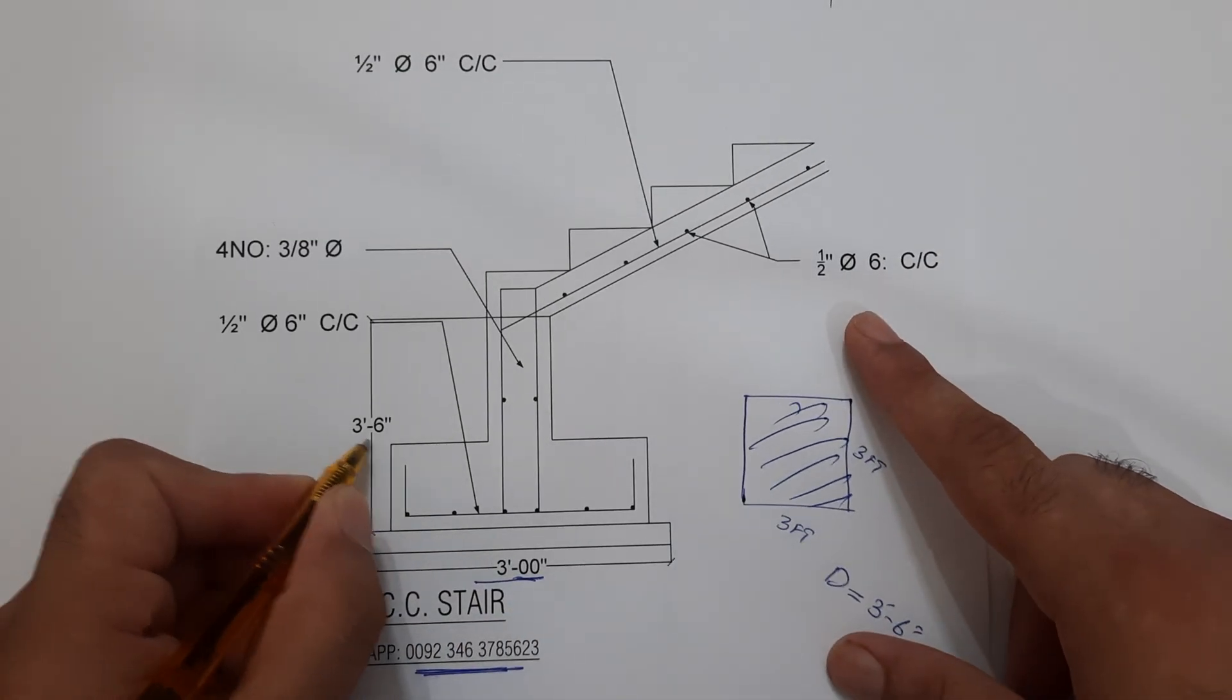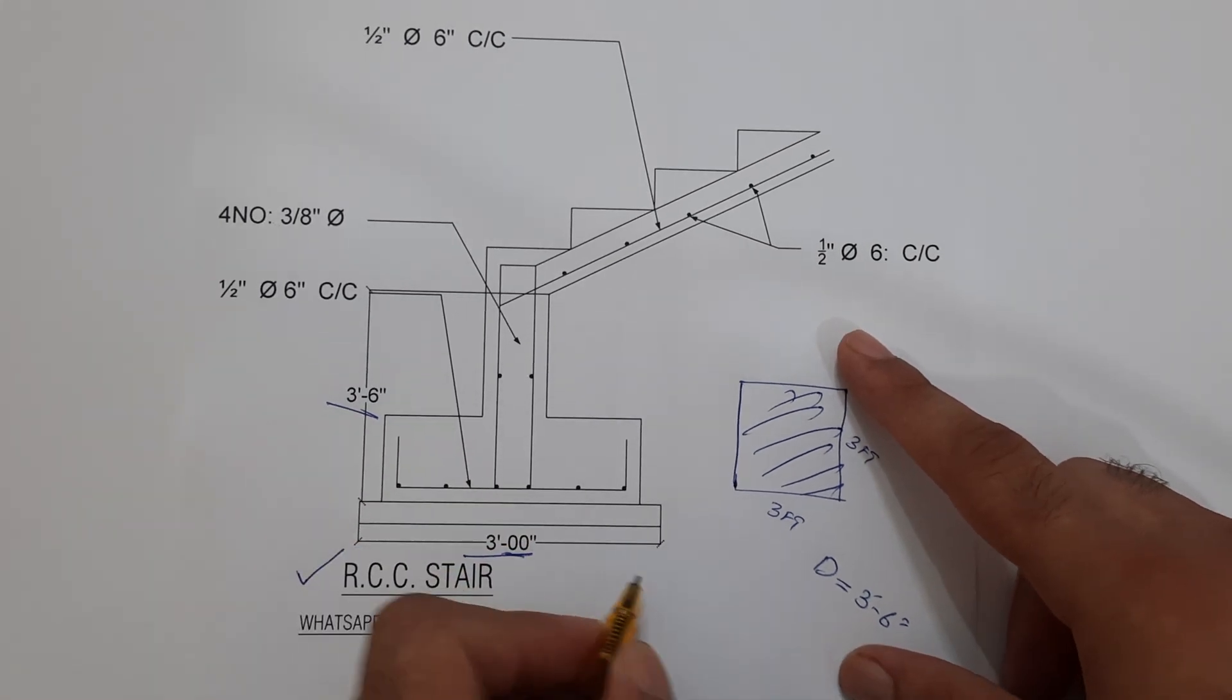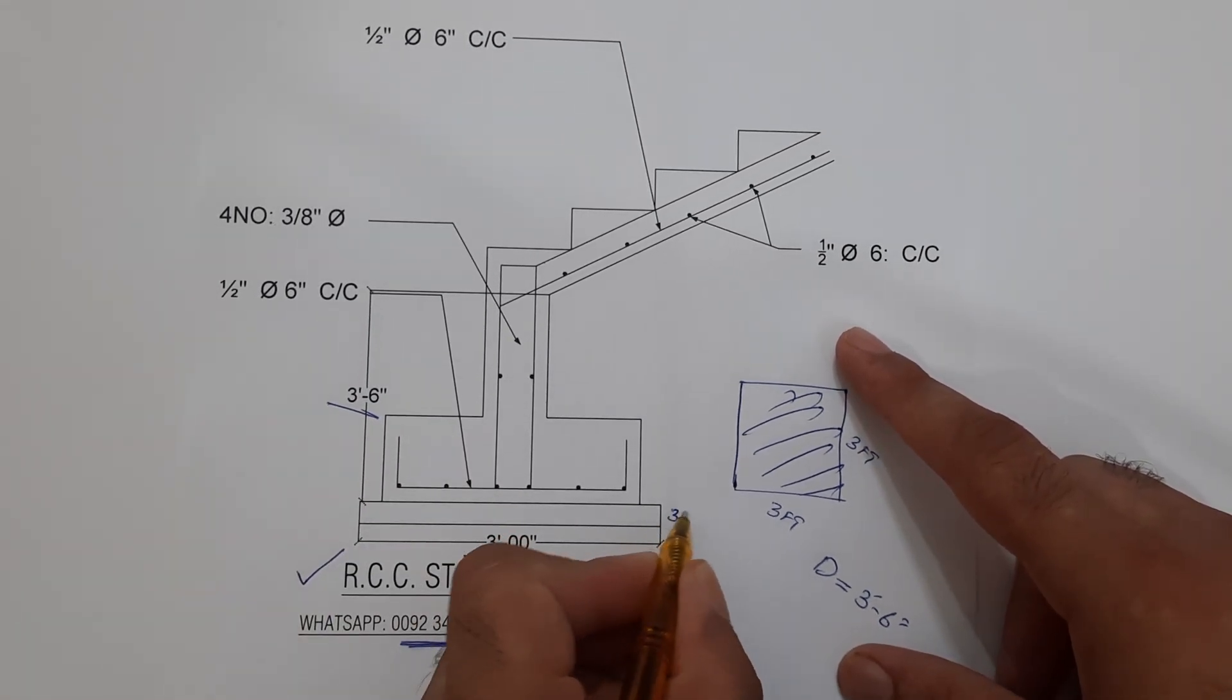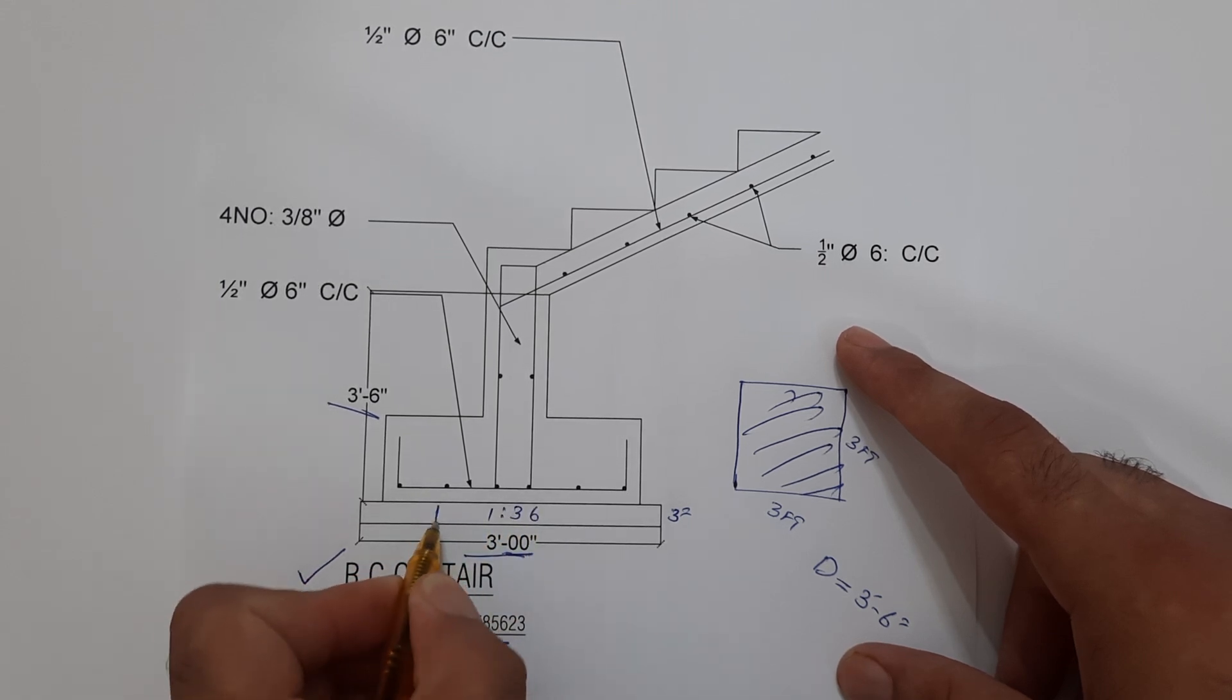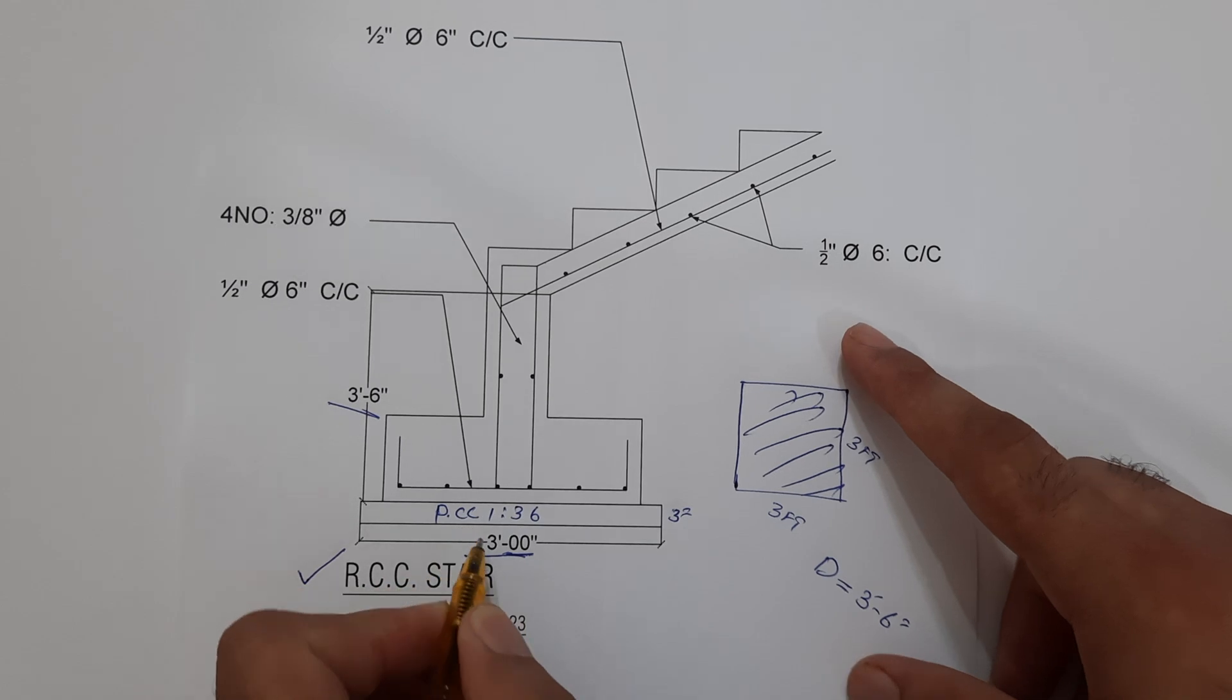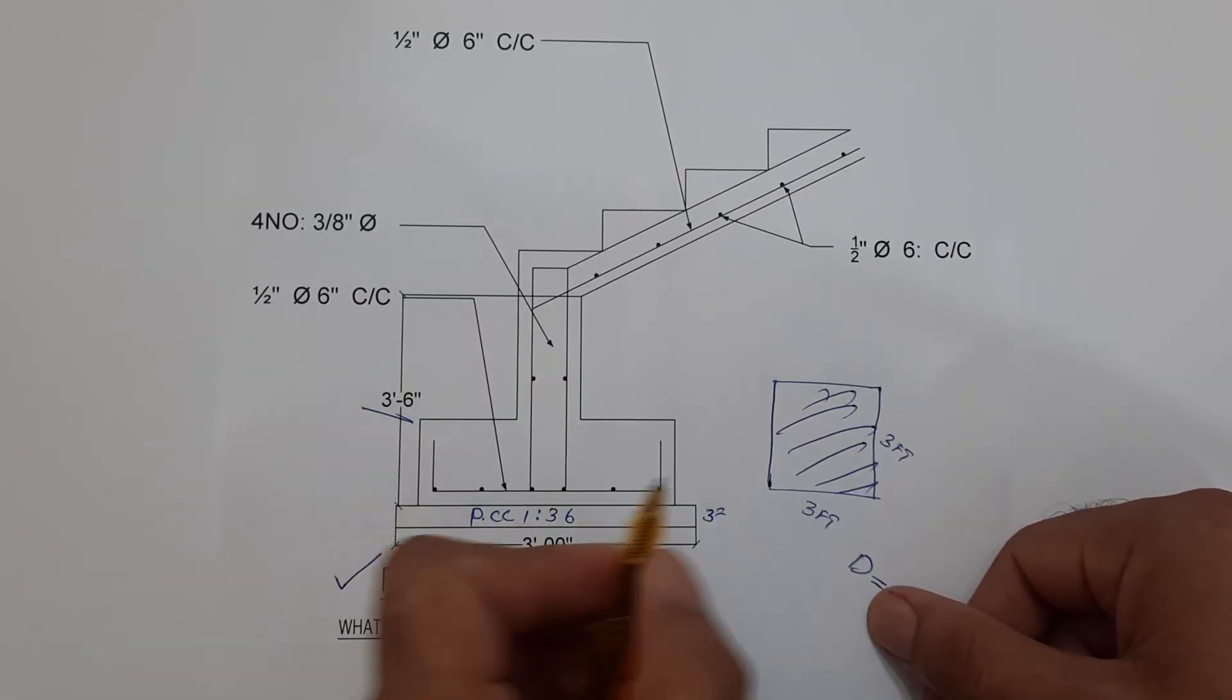Now let me guide you for steel reinforcement. First of all guys, you should do the PCC with the thickness of three inches and you can use one three six ratio. Okay, PCC plain cement concrete or you can say this is subgrade. Next guys, you can see the bit depth. This bit depth should not be less than 12 inches.